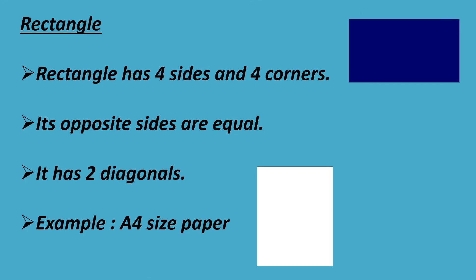Rectangle. Rectangle has four sides and four corners. Its opposite sides are equal. It has two diagonals. Example: A4 size paper.